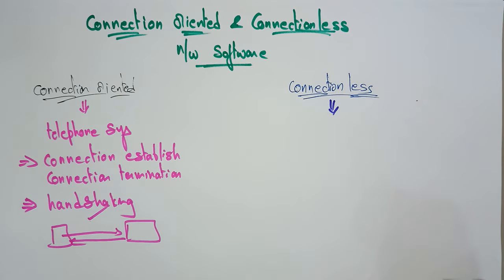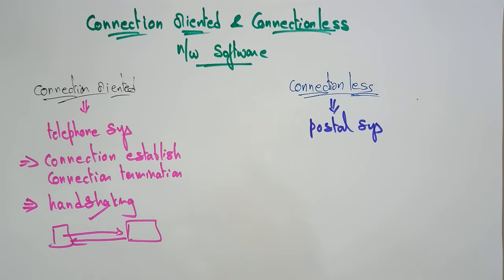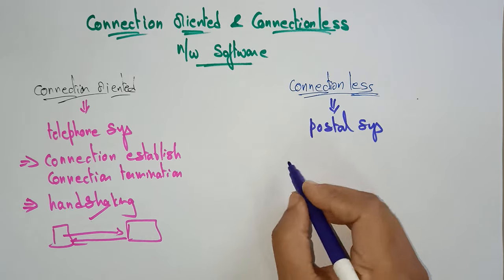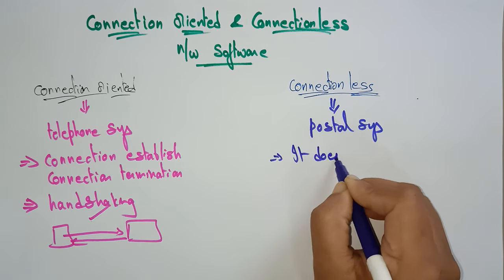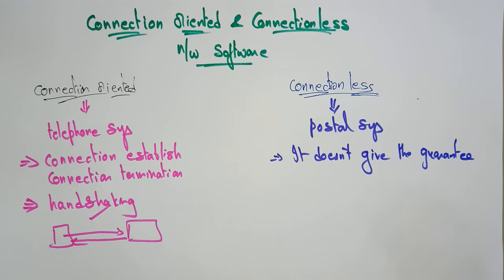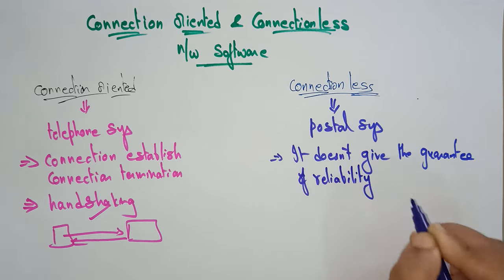Now let's have a look at connectionless. Connectionless means it is related to the postal system — a hard copy system. It does not include any connection establishment or connection termination. It does not give the guarantee of reliability, and the packets do not follow the same path to reach the destination.